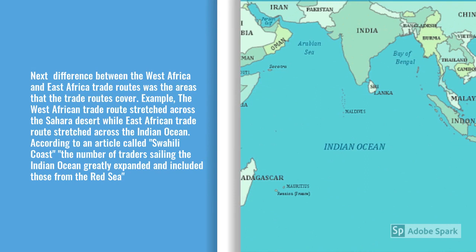Another very big difference between these two trade routes was the land and areas that they covered. The West African trade route basically just stretched across the Sahara Desert, while the East African trade stretched across the Indian Ocean. According to an article called 'Swahili Coast,' the number of traders sailing the Indian Ocean greatly expanded, and included those from the Red Sea.